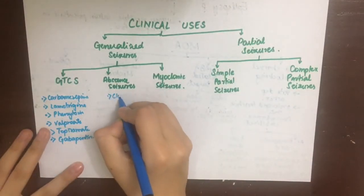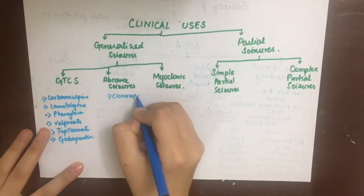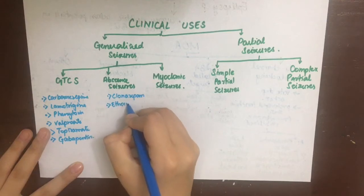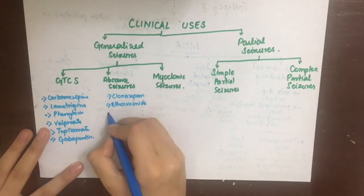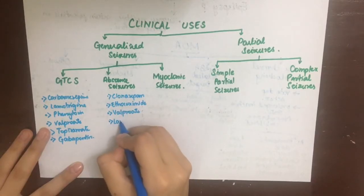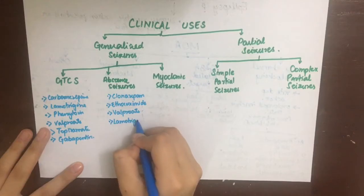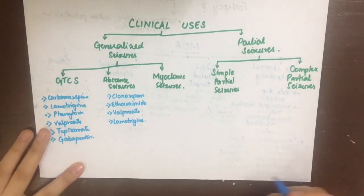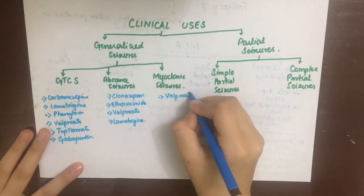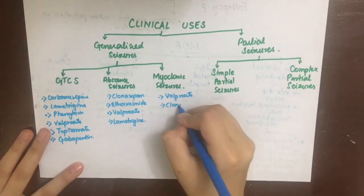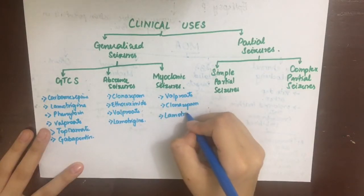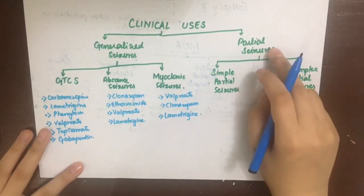Absence seizures are thought to start in the thalamus, which acts as a relay center and on-off switch for the cerebral cortex, causing a person to blank out or stare into space. The chief drug for absence seizures is ethosuximide, but clonazepam, valproate, and lamotrigine can also be used. Myoclonic seizures manifest as brief shock-like jerks of a muscle or group of muscles while the patient is awake; drugs used are valproate, clonazepam, and lamotrigine.